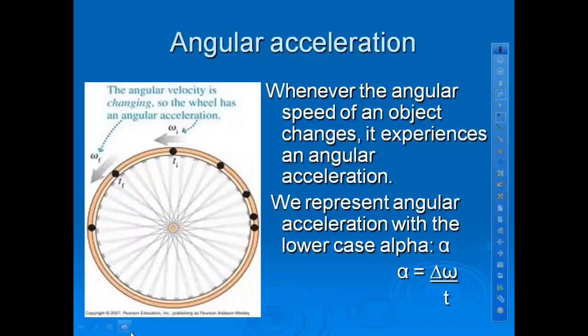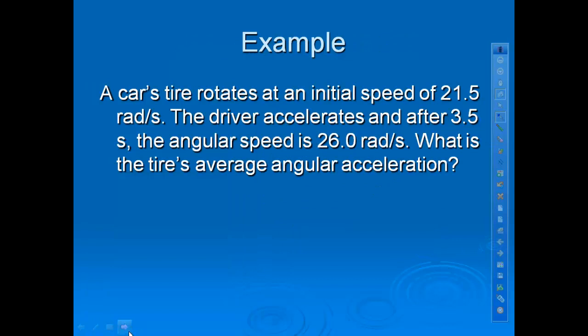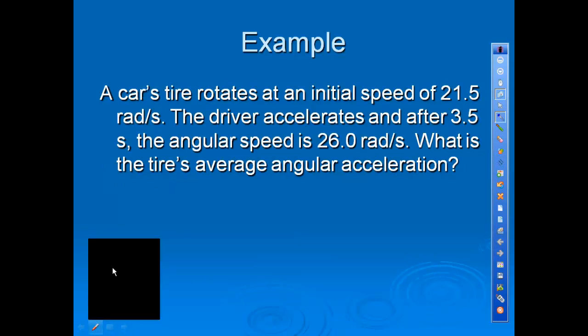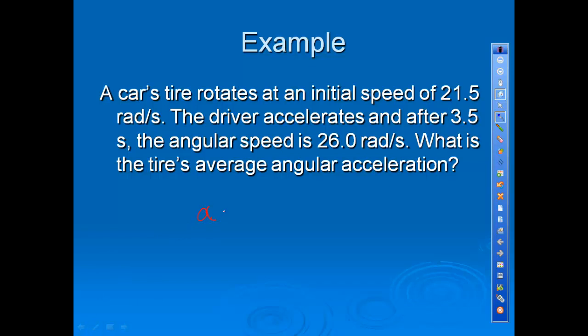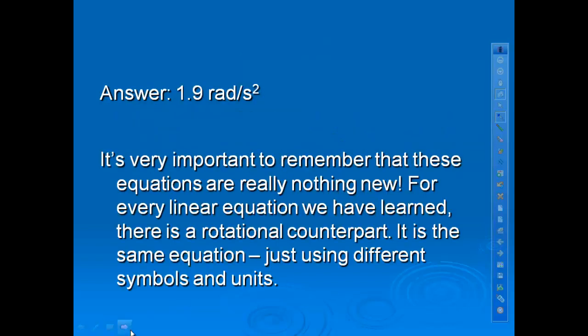Alright, angular acceleration is the last one. And this is, of course, just like I mentioned before, like regular acceleration is change in velocity over time. So, angular is change in angular velocity over time. So, whenever the speed of an object going in a circle is changing, that's when we have angular acceleration. So, here's a quick example. We have a car tire with an initial speed of 21.5. The driver accelerates and 3.5 seconds later, the speed is 26. What is the tire's average angular acceleration? So, for this one, again, pretty straightforward. We have our angular acceleration, which we use lowercase alpha for that, equals change in angular speed over time. So, the final speed is 26. The initial angular speed is 21.5. And the time is 3.5 seconds. So, when we do that, we get the answer to be 1.9 radians per second squared.